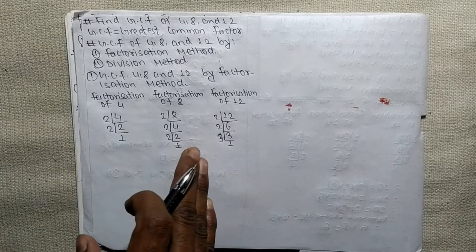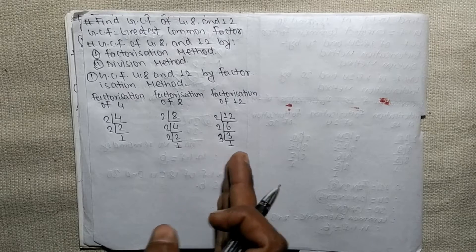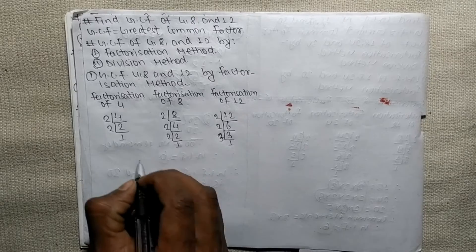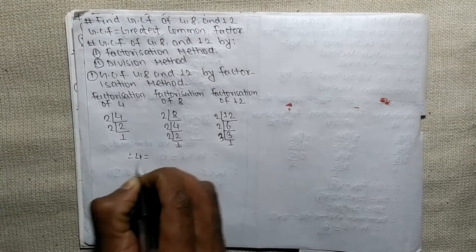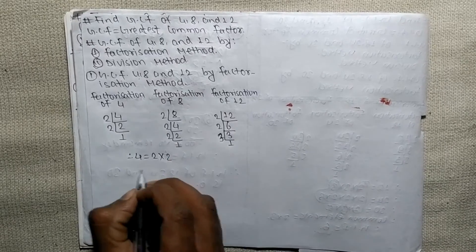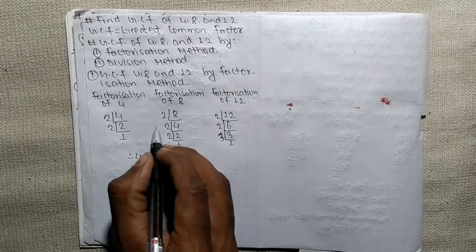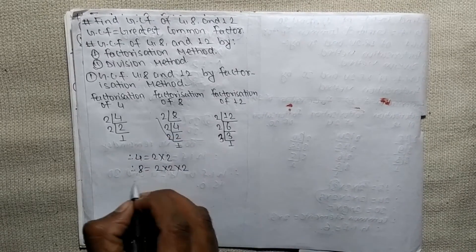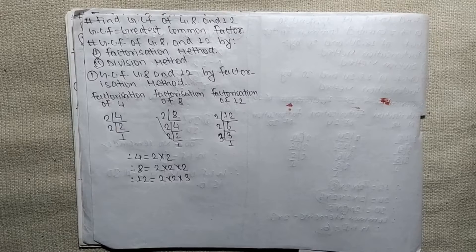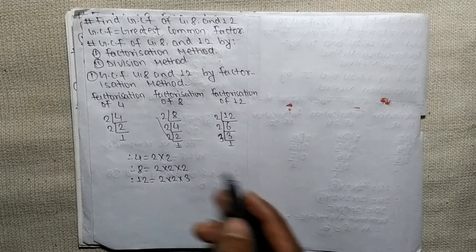We have factorized all the given numbers. Now we write out the prime factors of each number separately: 4 = 2 × 2, 8 = 2 × 2 × 2, and 12 = 2 × 2 × 3.